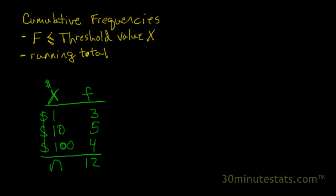In our last video, you got to see how to create a cumulative frequency distribution using a frequency distribution table. The cumulative frequencies are really just the frequency of observations — the number of observations that are less than or equal to some threshold value of x. So we pick a threshold value of x and ask how many observations fall at or below that particular value. It's just a running total from the minimum value of the distribution on up to whatever your threshold happens to be.